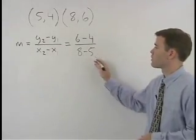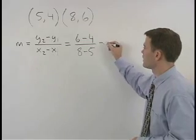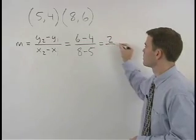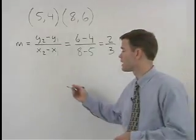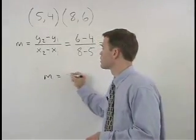So 6 minus 4 over 8 minus 5 simplifies to 2 over 3. The slope of this line is 2 thirds.